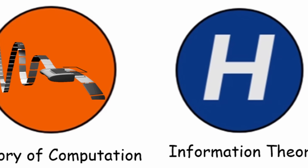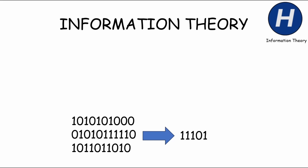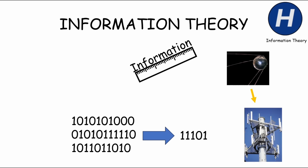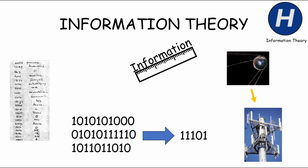Information theory is a branch of study that focuses on how information is transmitted and processed. It helps us measure and understand the amount of information in a message, considering concepts like data compression. In simpler terms, it's like exploring the best way to send and receive information. An easy example is thinking about sending a message in secret code — information theory helps us measure how much information is stored in the coded message and how efficiently it can be transmitted.